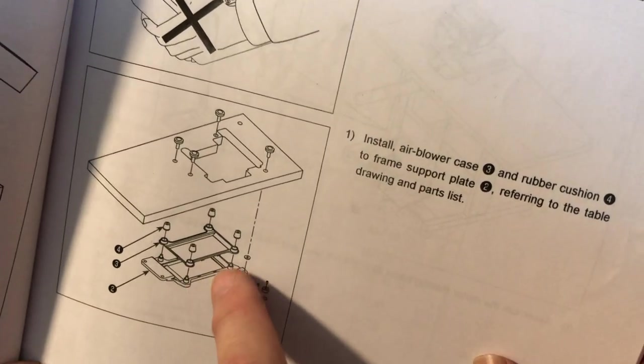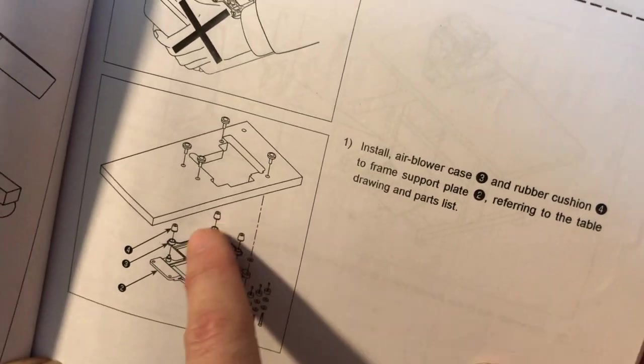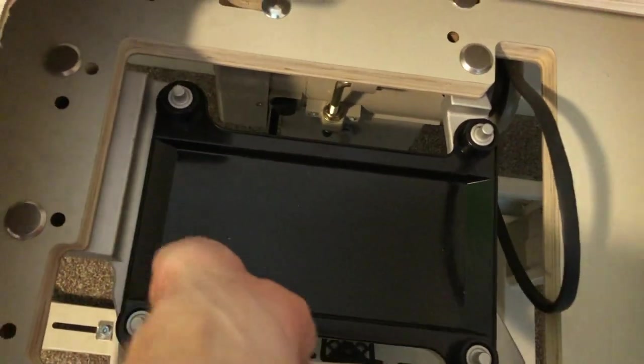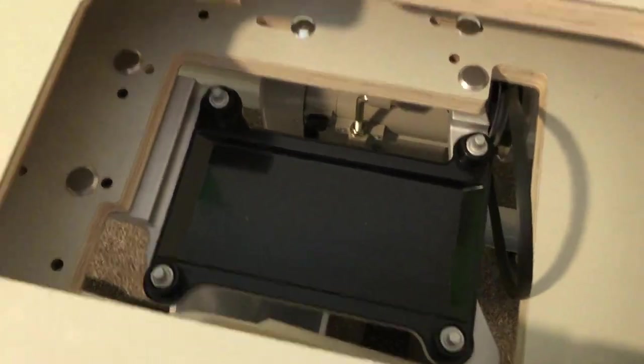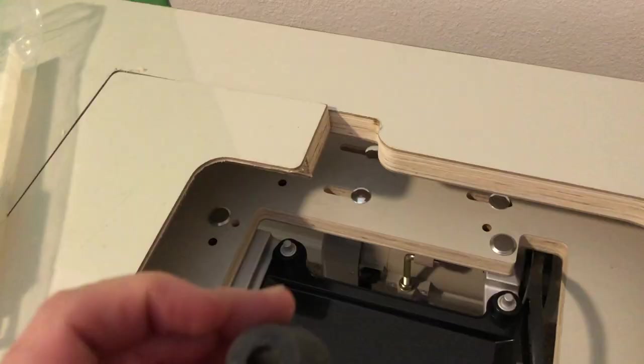Alright, so for step one here it's saying to put this plastic tray in place and this other piece underneath and the four rubber stoppers, which they already installed that for us. So that's, we really appreciate that. Thanks Juki.